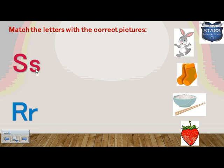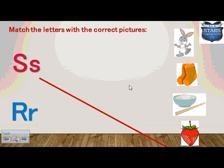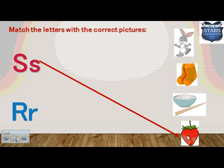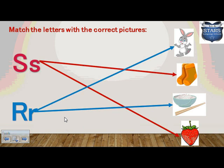Now we have letter S and letter R. We are going to match the letters with the correct pictures. We have rabbit, socks, rice, and strawberry. Socks start with letter S, and strawberry starts with letter S. The rabbit starts with letter R, and rice starts with letter R.